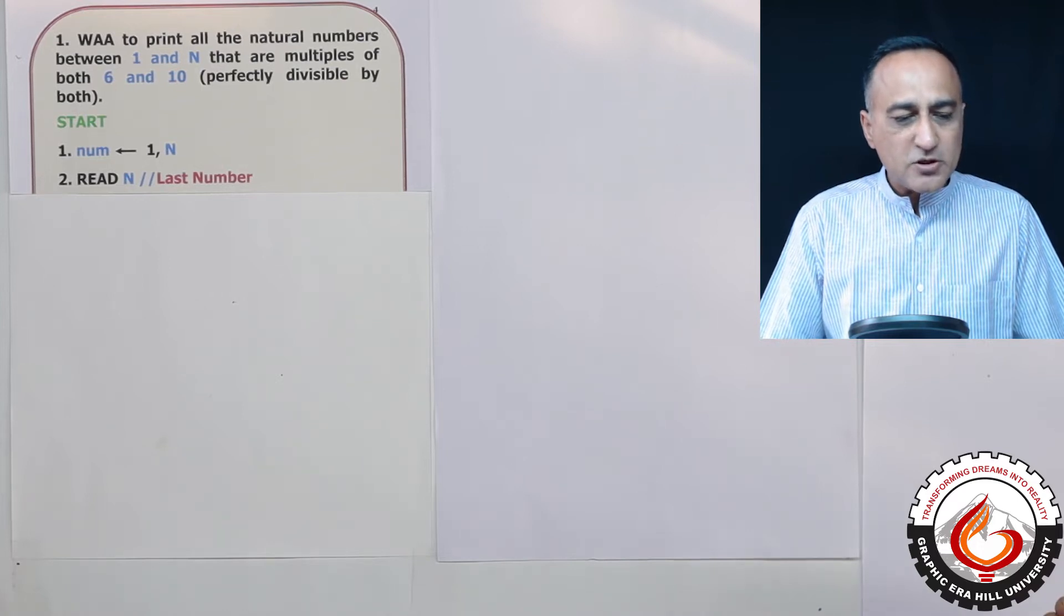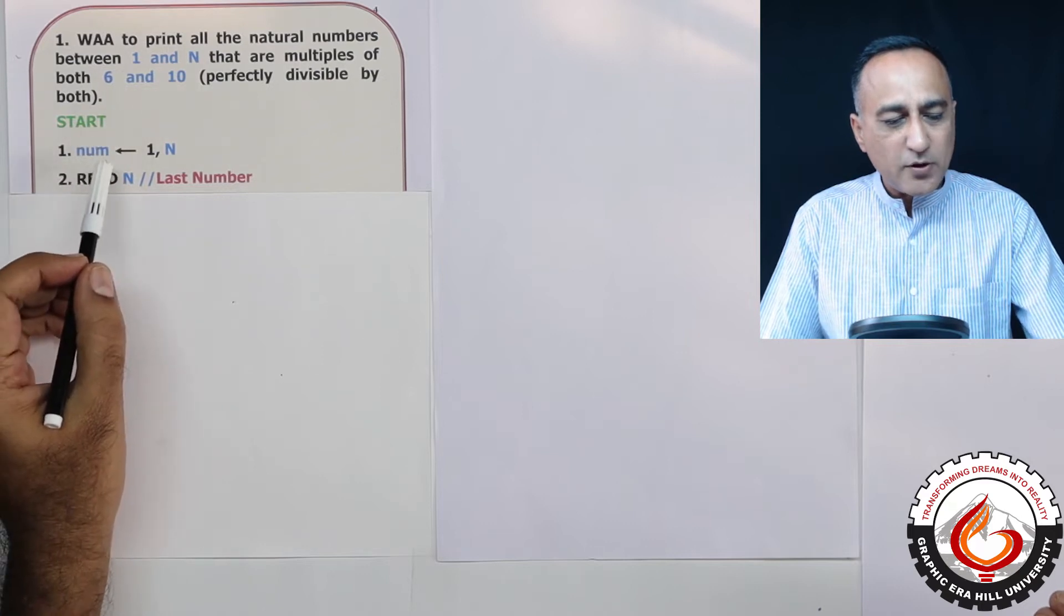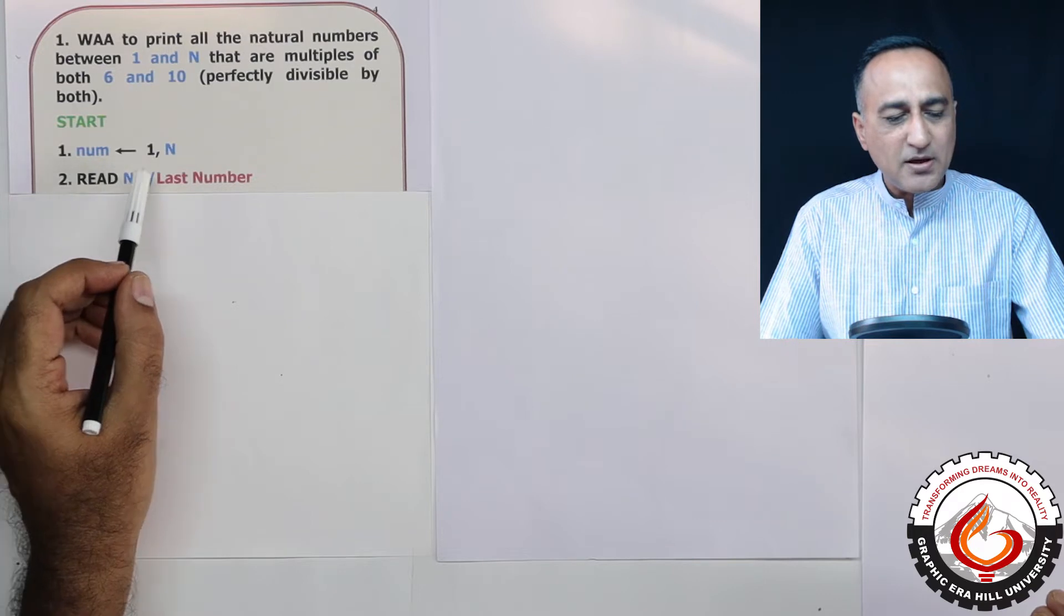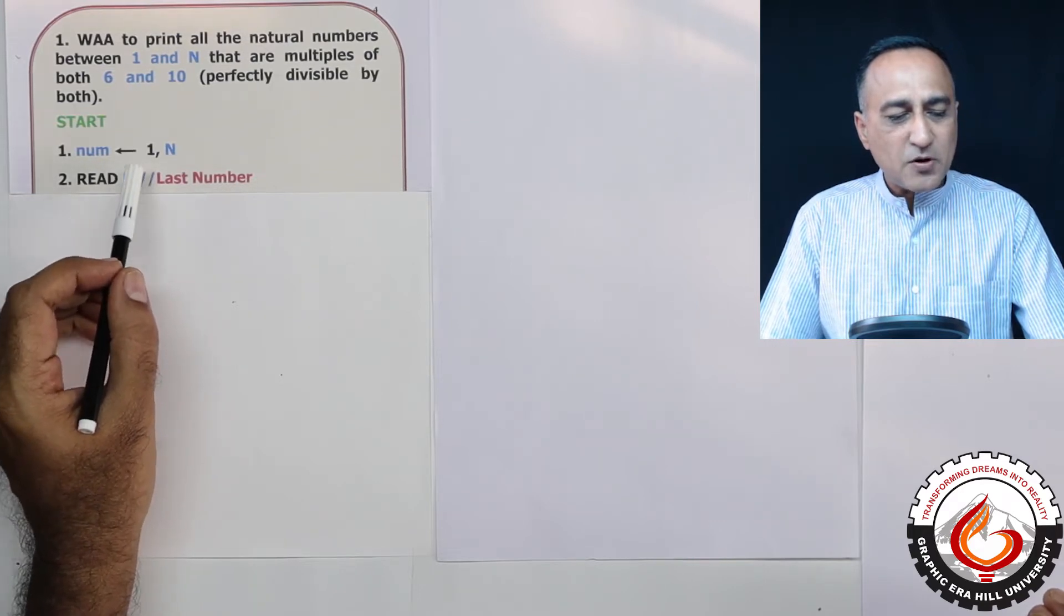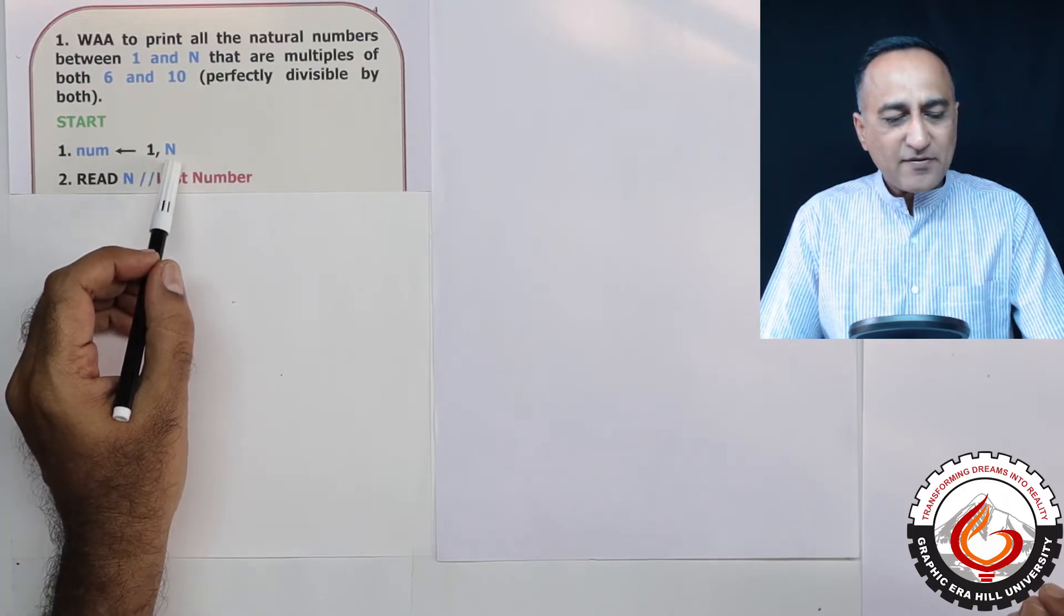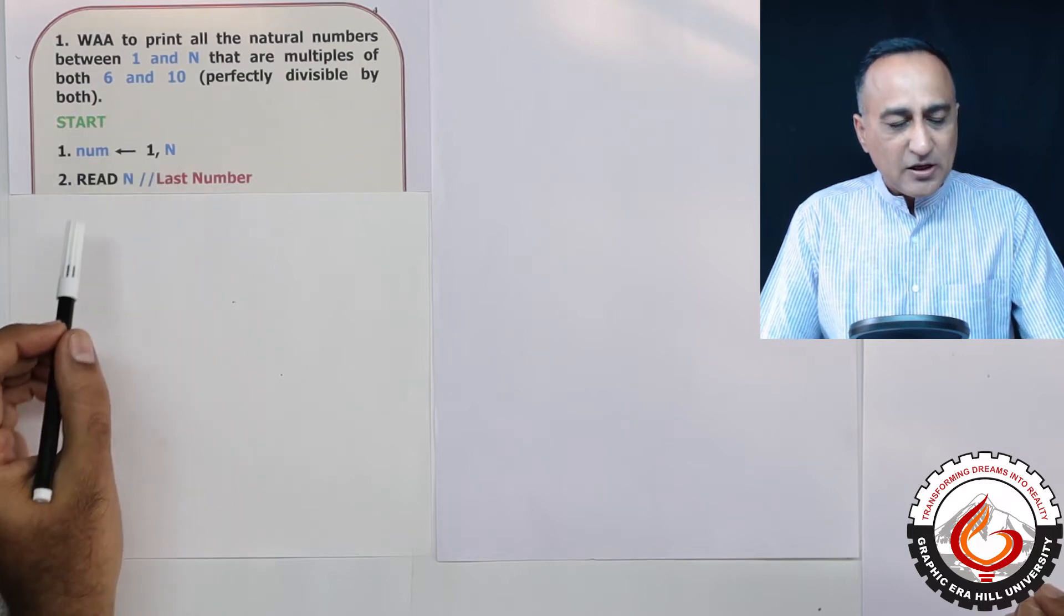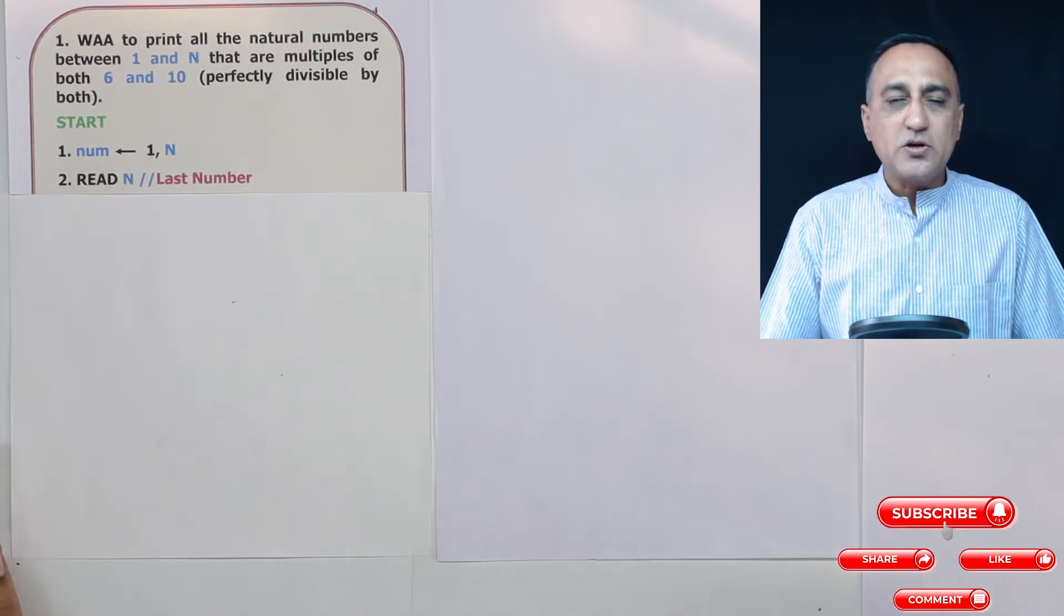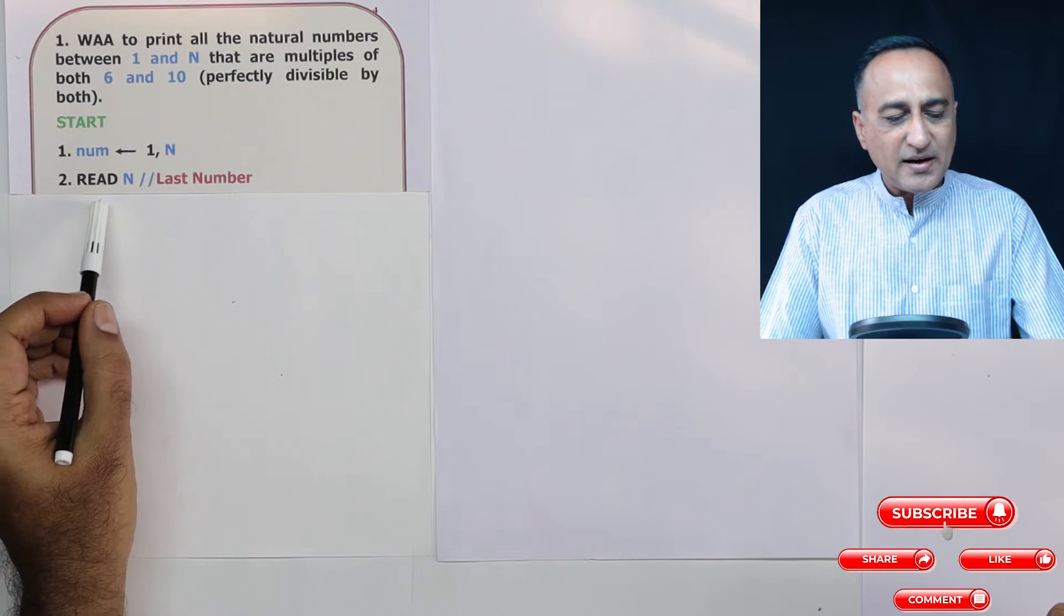So in order to do this problem, I need one variable with the initial value one. In this case, I've used a variable called number with initial value one, because I want to start from one. Then I have the endpoint variable called n. Now in order to find out the range the user wants to test this logic, I say read n.